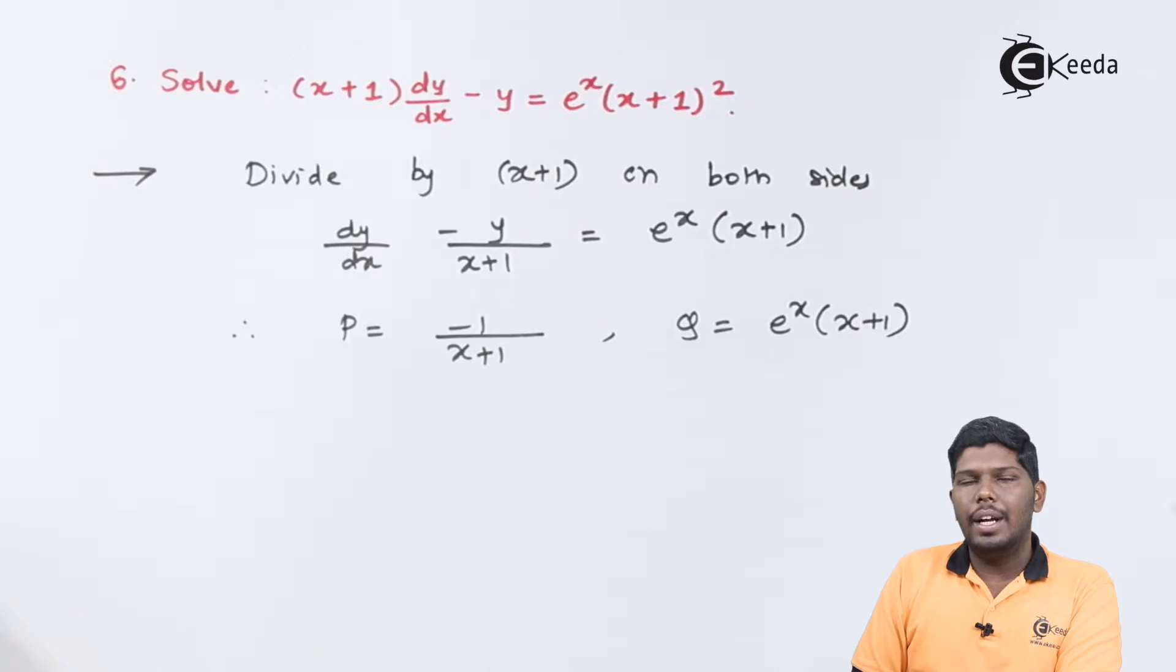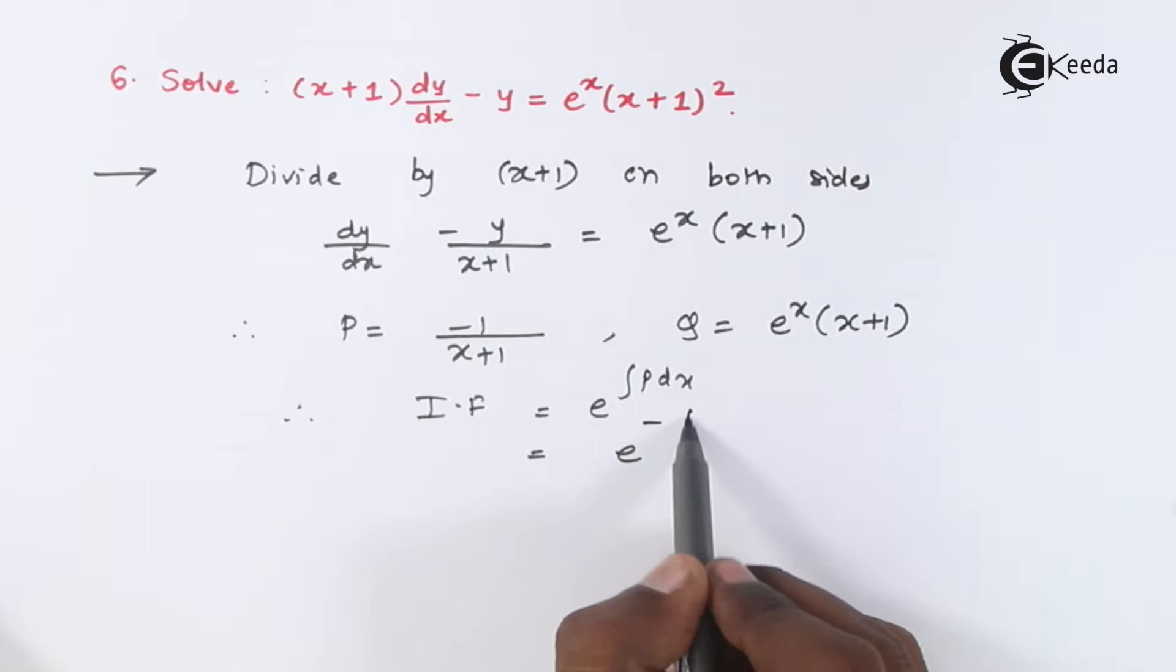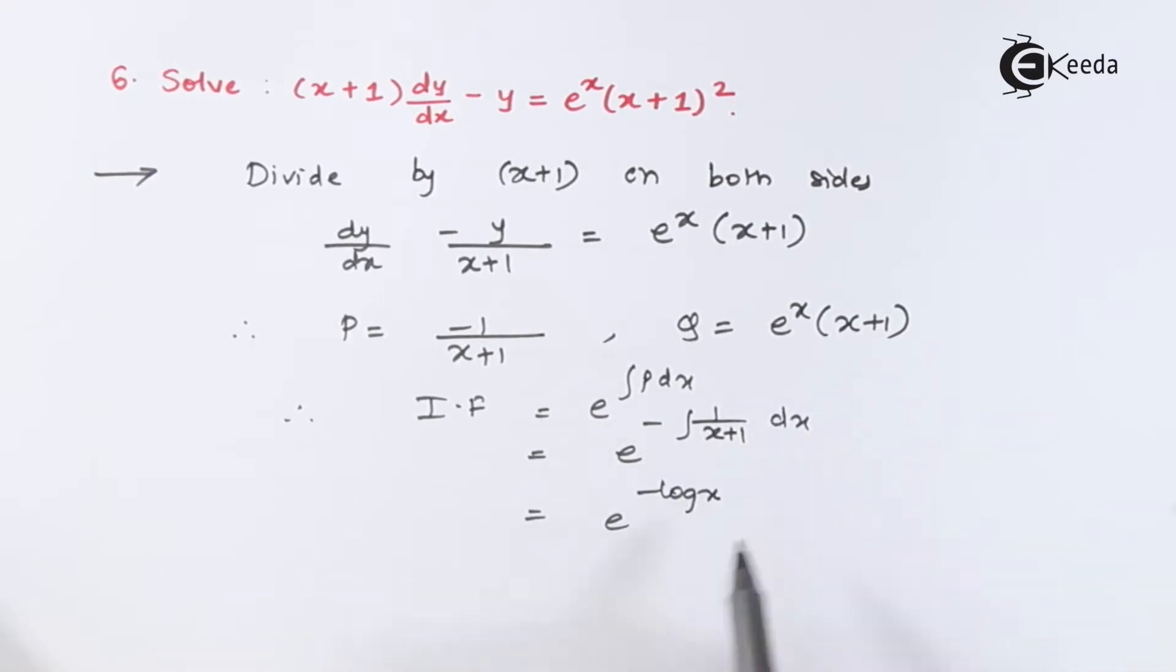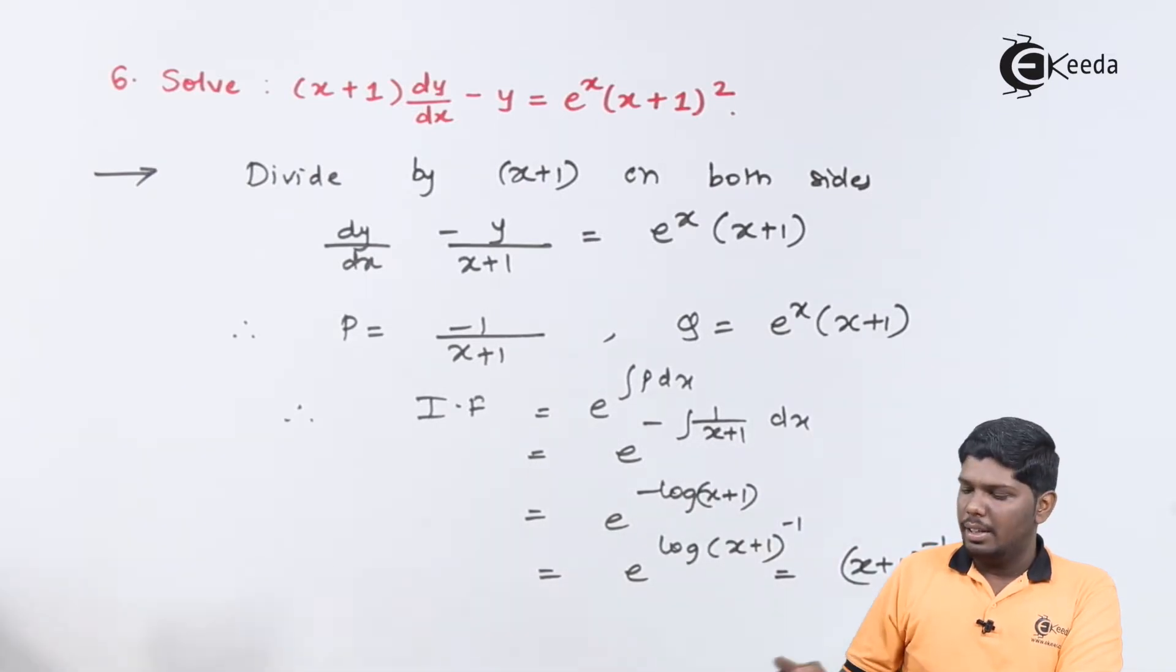After that we can find the value of integrating factor. That will give you e^(∫-1/(x+1) dx). Integral of 1/(x+1) we know it is log(x+1). So this will give you log(x+1). Using the formula m log a we will get log(a^m) and e^(log x) will give you x only. Similarly, this will give you (x+1)^(-1) that will be 1/(x+1). So this is our integrating factor.